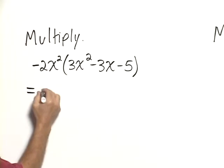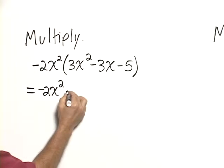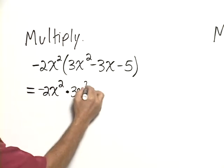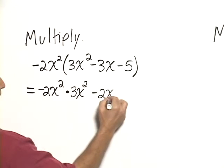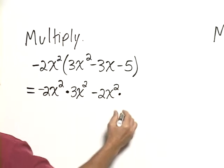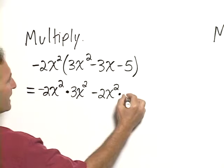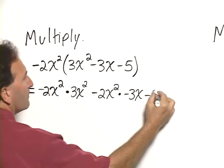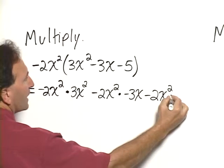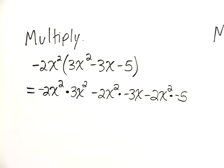So we begin with negative 2x squared times 3x squared, negative 2x squared times the negative 3x, and negative 2x squared times negative 5.